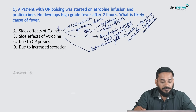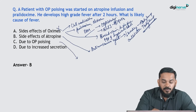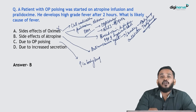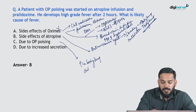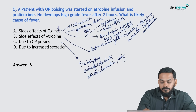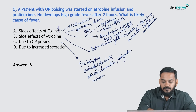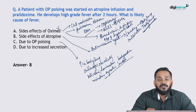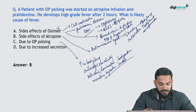So atropine is the correct answer for causing high-grade fever. Organophosphate poisoning itself does not produce increased body temperature; it produces symptoms of cholinergic overactivity: salivation, lacrimation, bradycardia, urination, defecation, and miosis. So the correct answer is option D — atropine.